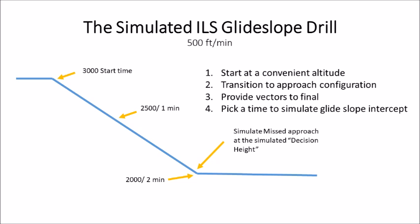The glide slope drill goes as follows. We set up the airplane in our approach level configuration at approach speed. Sometimes I have the student do some turning to simulate being vectored to the final approach course. At some predetermined point on the second hand we will simulate glide slope intercept, and at that point or slightly before, the student commences a 500-foot-per-minute rate of descent.